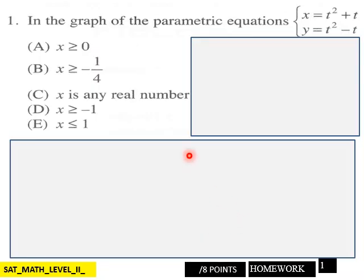Page 1 of the homework is 8 points. In the graph of these parametric equations, which one of these is true here for this? I give you plenty of room here to work out your solution. That's 8 points, page 1.